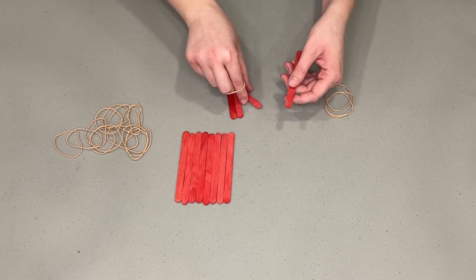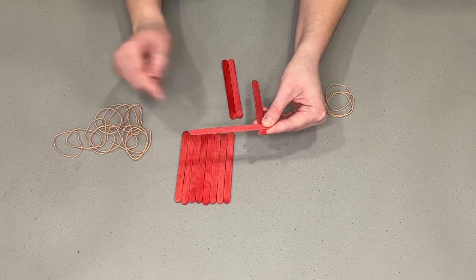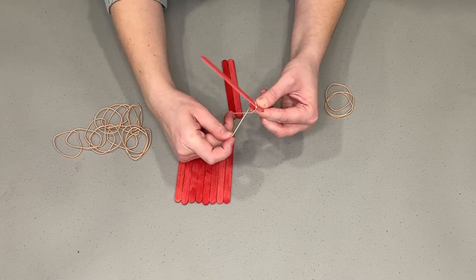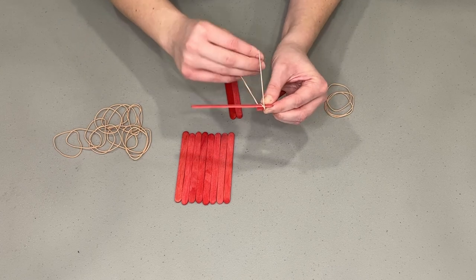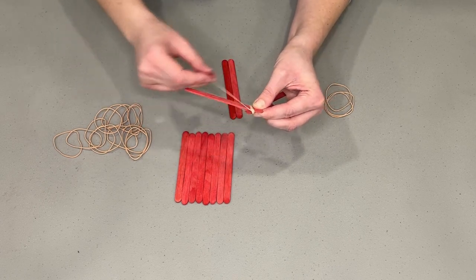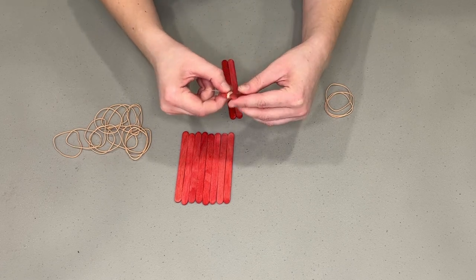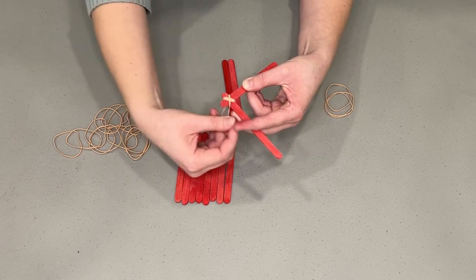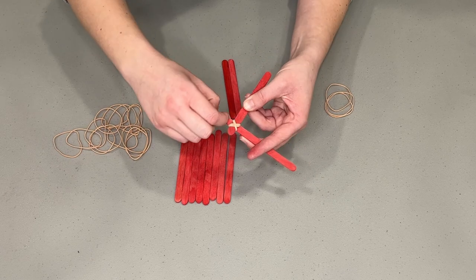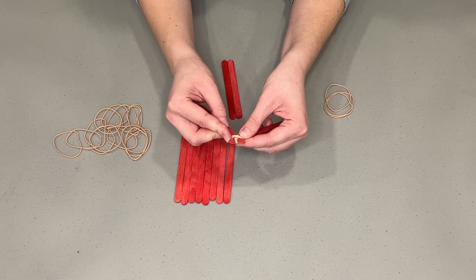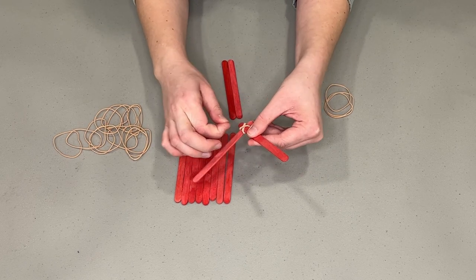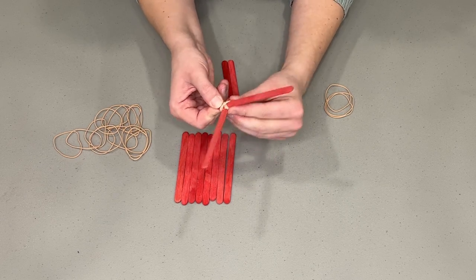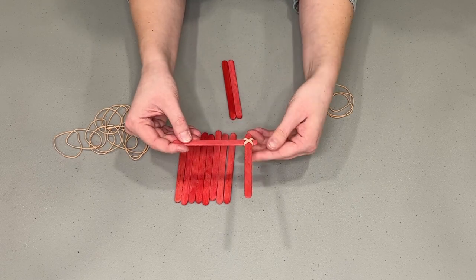So for the square start with two popsicle sticks. Cross them like this so that they're on a right angle from each other. And put the elastic through here. And wrap it. And again. I'm going to do it four times because I find that's good for this size of elastic. And then turn. And we want to make an X. So now we're going to wrap it around this way so that we have an X created with our elastic.